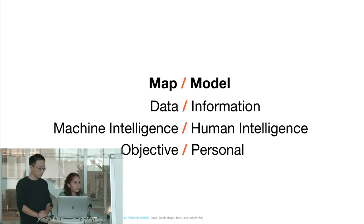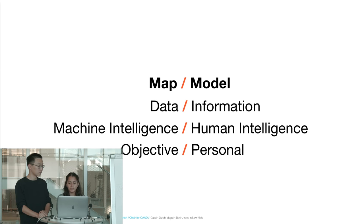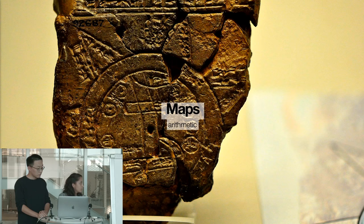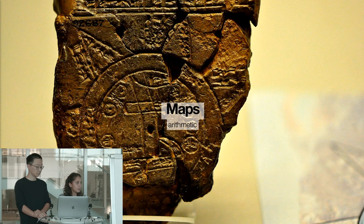We talked about this last lecture, when we discussed the difference between machine intelligence and human intelligence. We agreed that machine intelligence is objective and deals with data. Maps are in the domain of arithmetic — they are about numbers, about machine intelligence. They are absolute and represent a local globality.